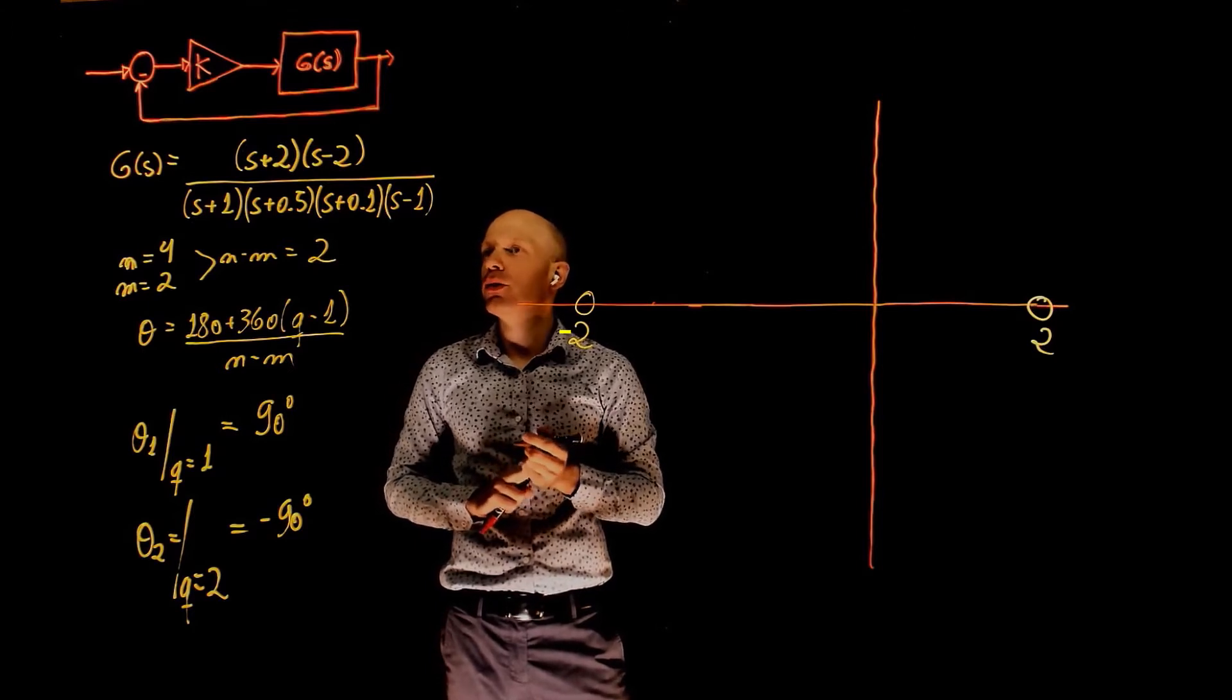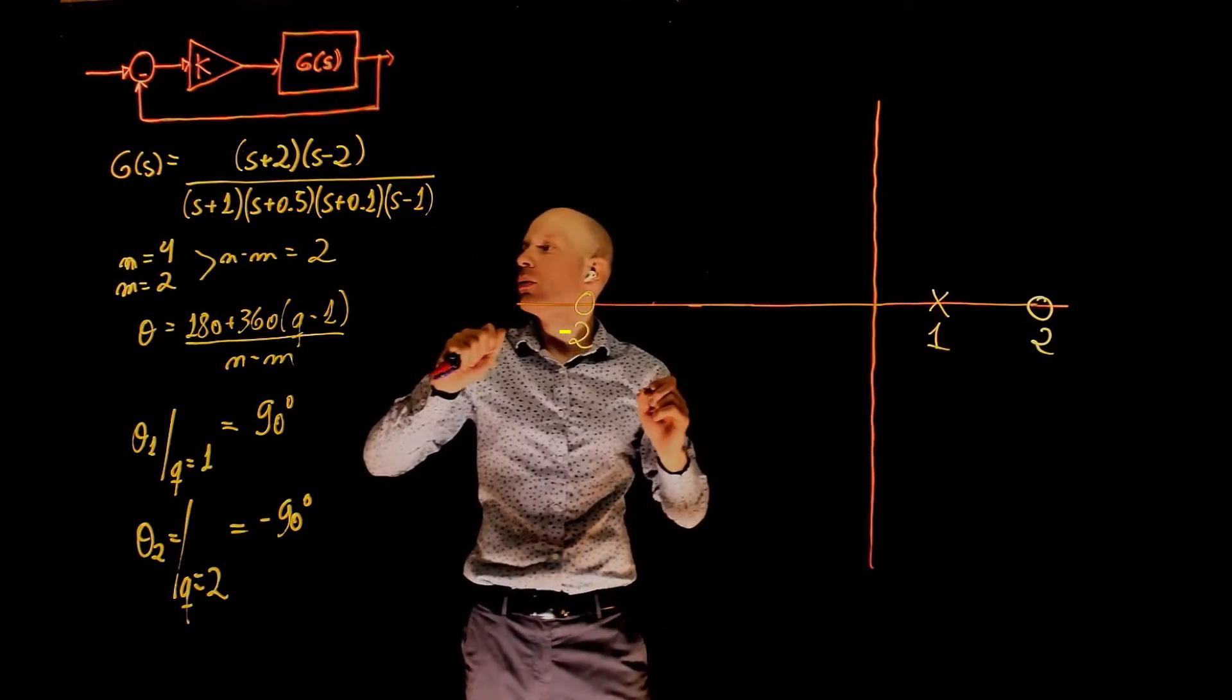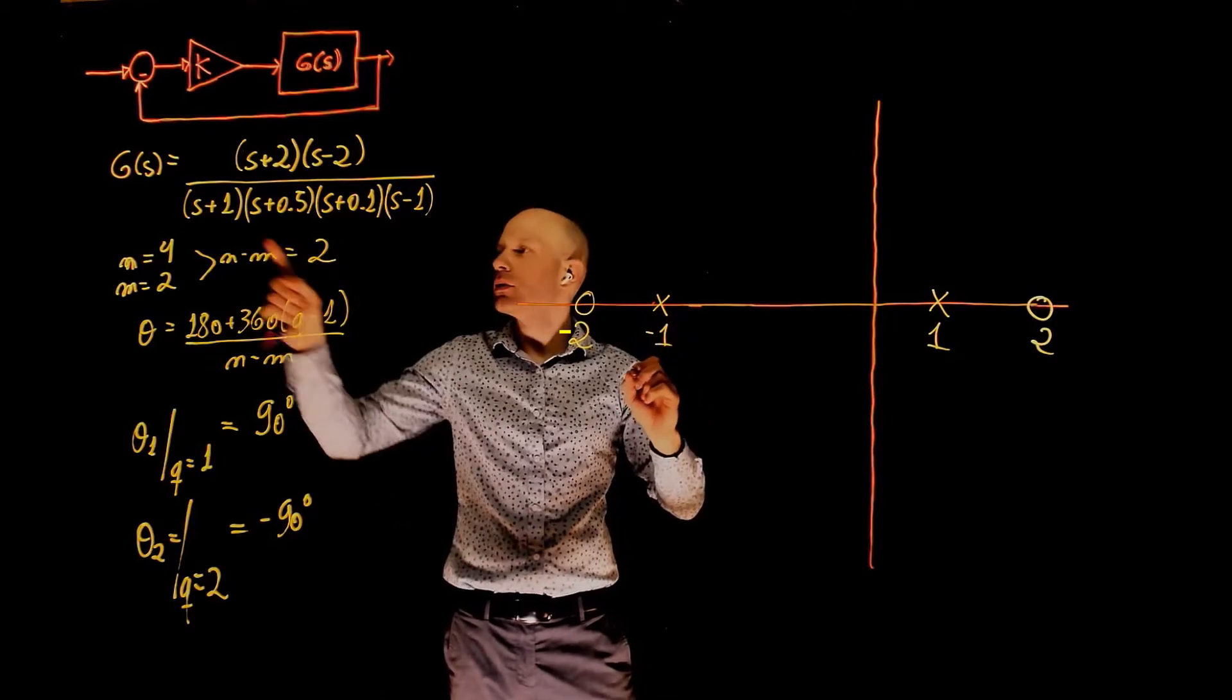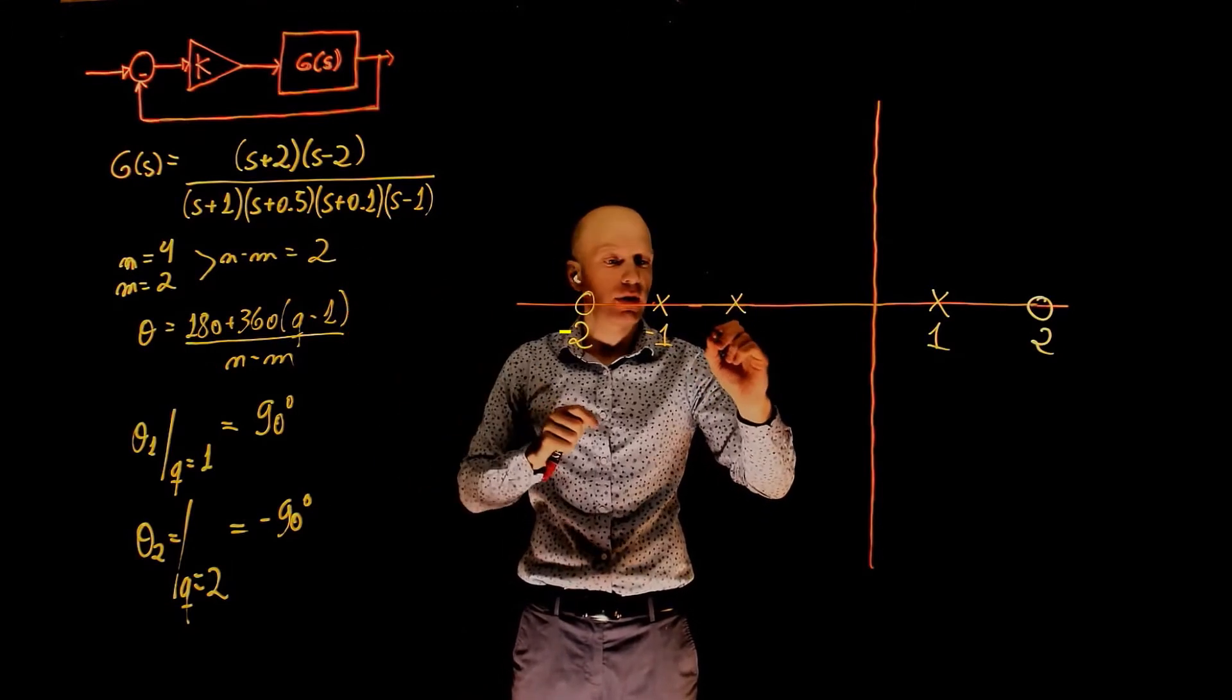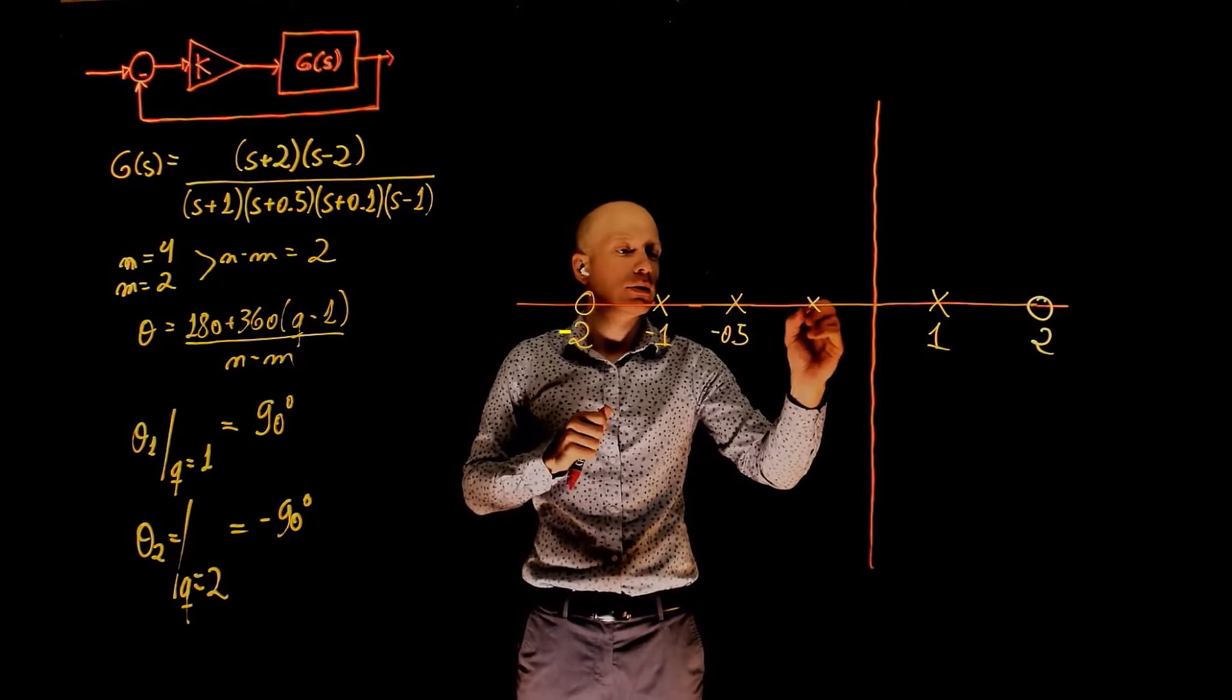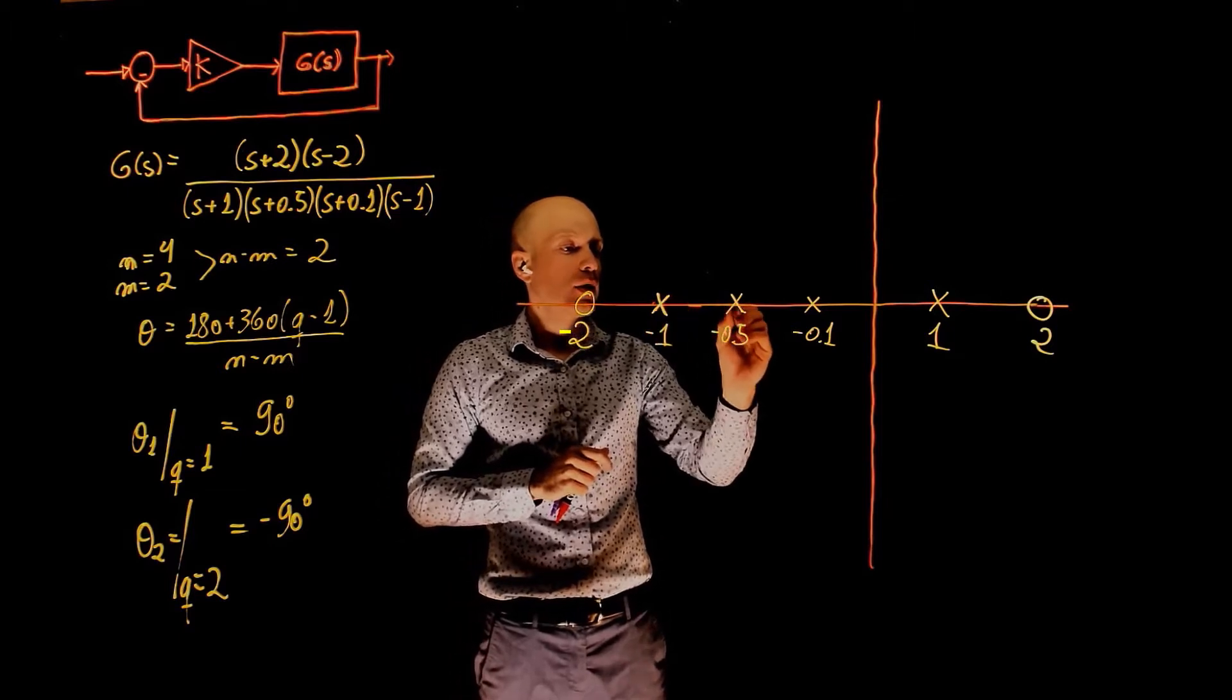And now let's place the poles. We have a pole at 1, we have a pole at negative 1. And we have a pole at negative 0.5 and another pole at negative 0.1. So four poles and two zeros.